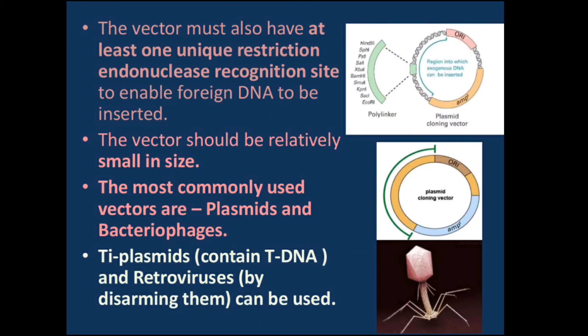Recombinants can be selected from non-recombinants by plating the transformants on antibiotic-containing medium. The recombinants will grow in the antibiotic-containing medium but not on medium that does not contain that particular antibiotic.